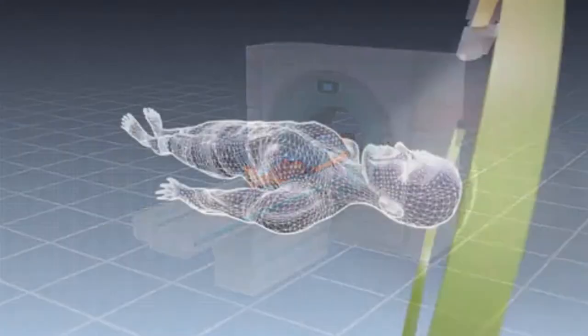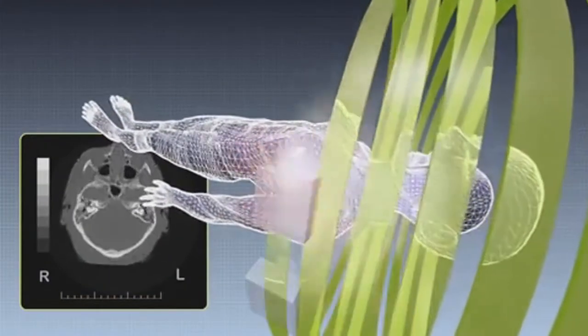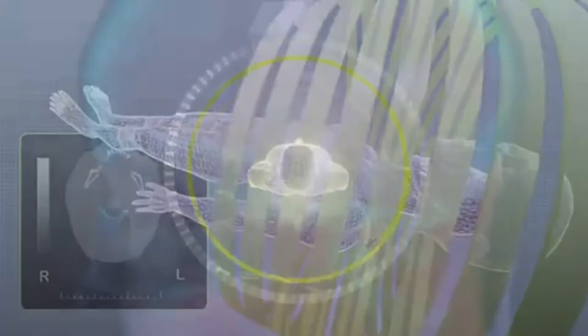A scanning apparatus rotates around the patient, aiming spirals of X-ray beams at whatever section of the body is being scanned.